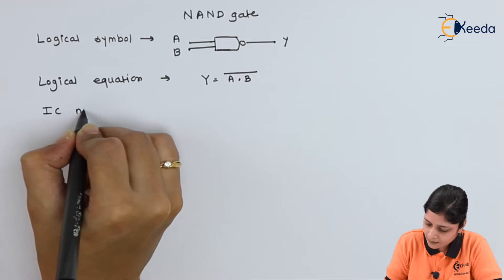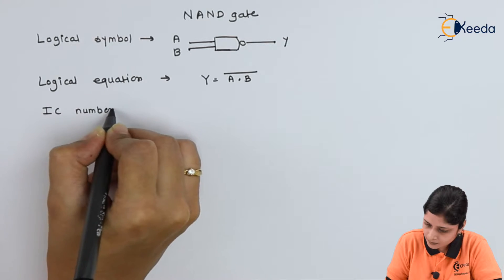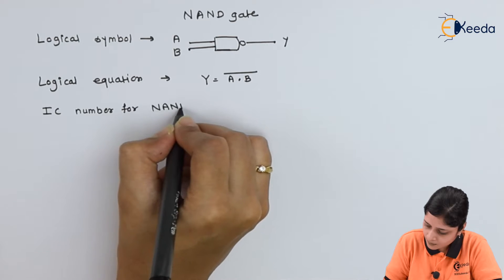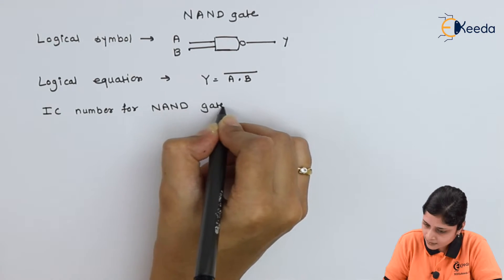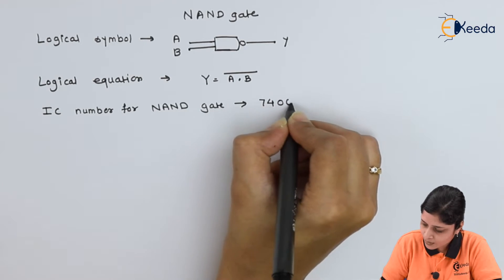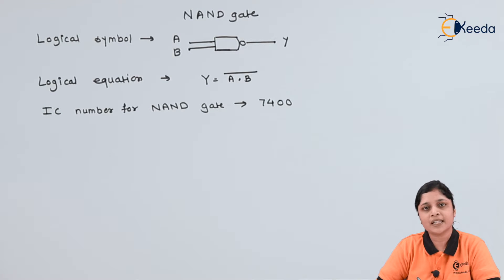IC number for NAND gate is 7400. Again I am telling IC numbers are used for practical purposes for identifying the ICs. All the IC numbers are required.